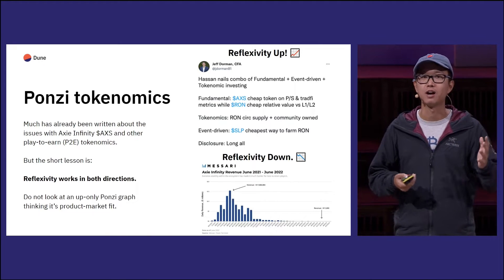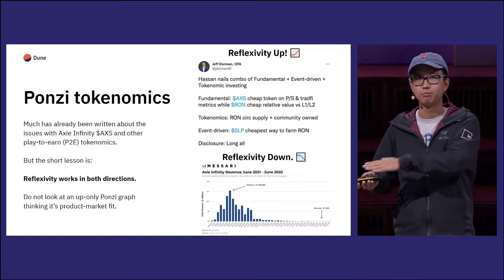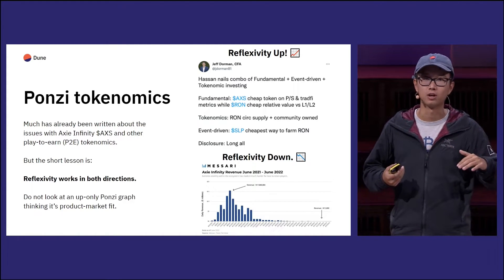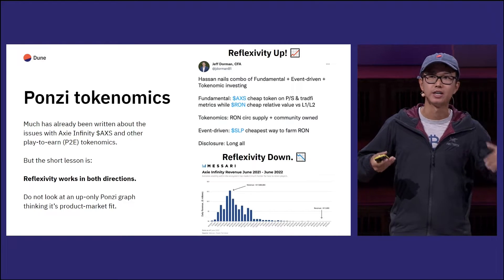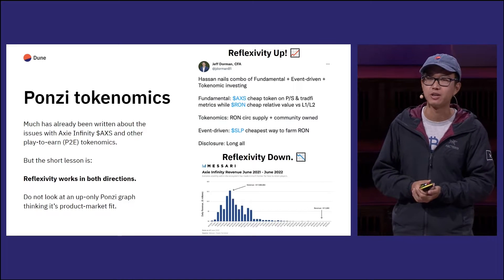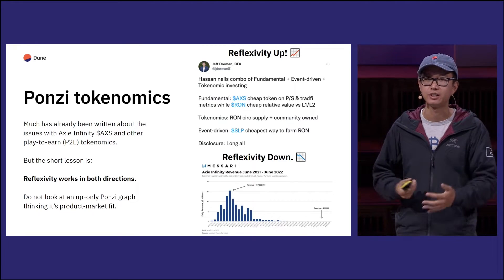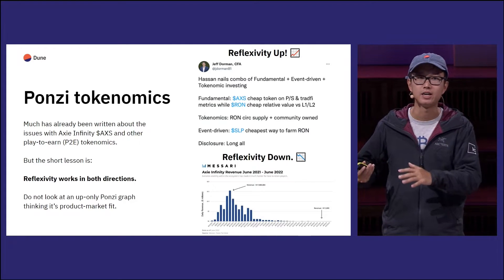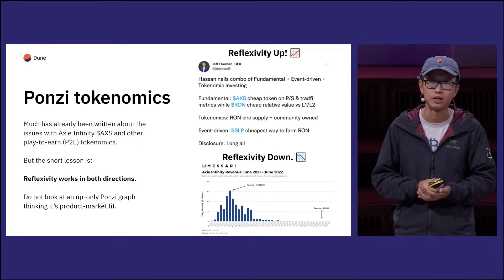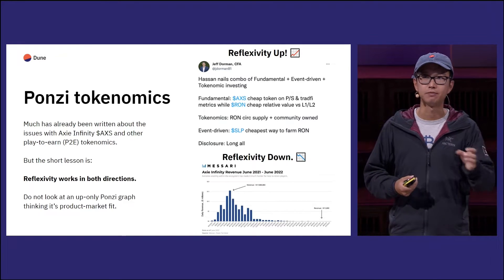A big difference between Ponzi graphs and the graphs I showed earlier with OpenSea, SuperRare, and Nexus is: when it bottoms out, Ponzi graphs asymptote to zero and never recover. Whereas projects with real usage have a hard floor where the floor is higher than the previous all-time high, waiting for another macro catalyst to have another boom. This reminds me of cryptocurrencies and ICOs — back in 2017-2018, Ethereum went from $1,400 down to $80 and had a floor of $80, whereas most 2017 ICOs just asymptoted to zero. Product-market fit matters rather than just designing nice tokenomics to inflate the KPIs of the graph.